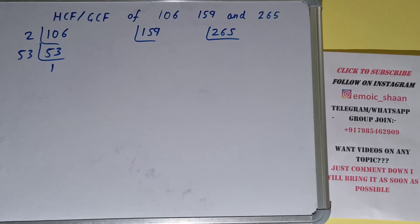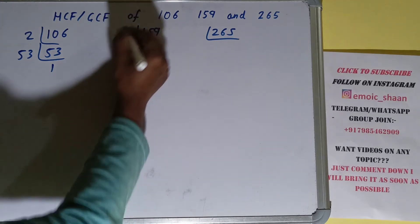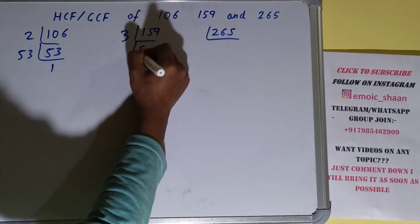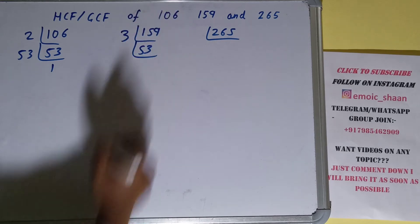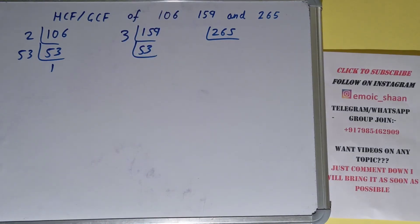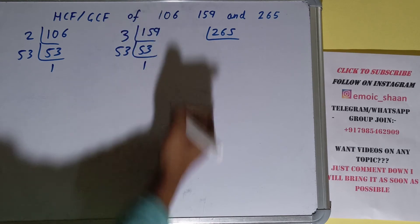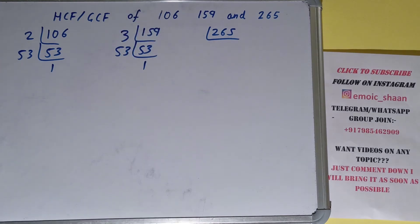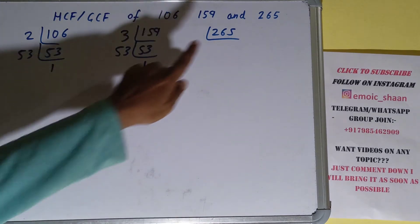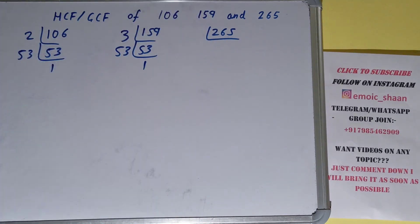Now we need to do the same with the number 159. Is 159 divisible by 2? No. So we check with the next lowest prime number, which is 3. Is it divisible by 3? Yes it is, and we're left with 53. Now 53 is not divisible by 3 because it is a prime number, so it is only divisible by itself, and we're left with 1. We are done with 159.